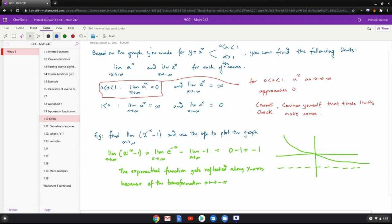So here's the result. When a is between zero and one, this limit is zero. Because if you take a number less than one multiplied by itself a bunch of times, it's just going to get smaller and smaller and smaller.